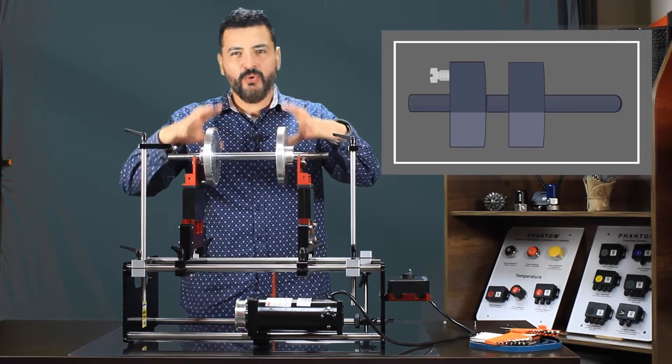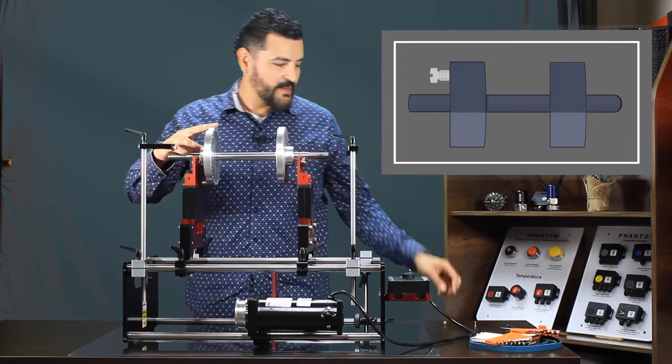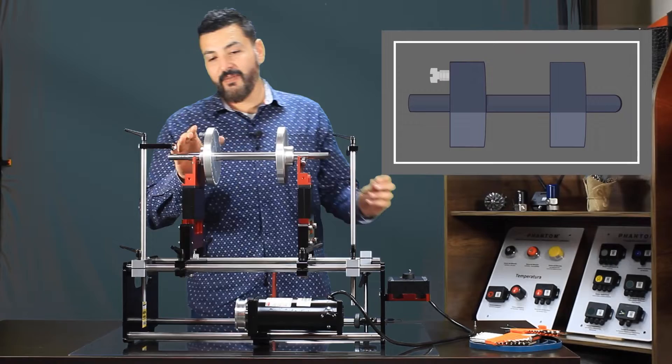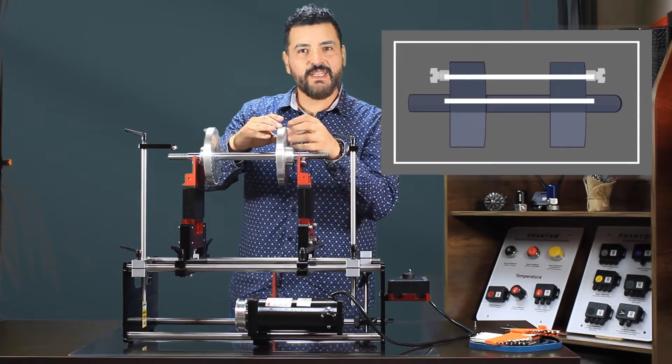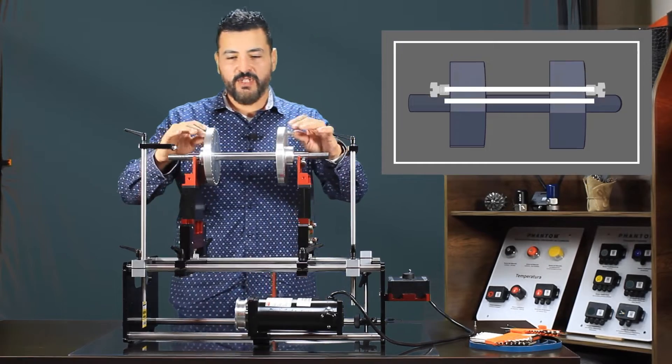What if we lengthen this disc or we place two discs in the system? The effect will remain if the two eccentric weights are at the same angle. The discs will move to their equilibrium position.